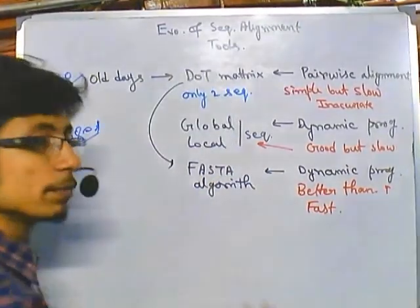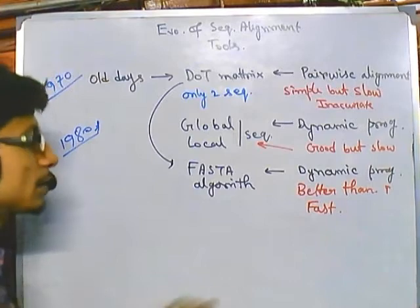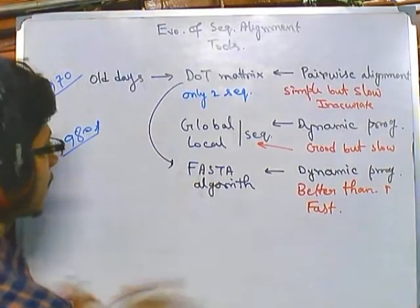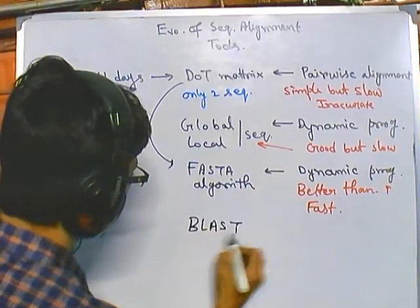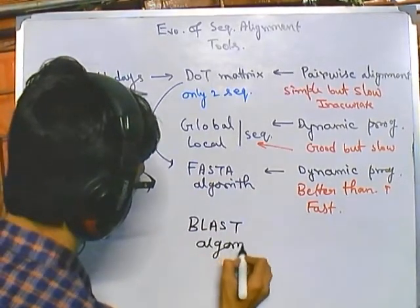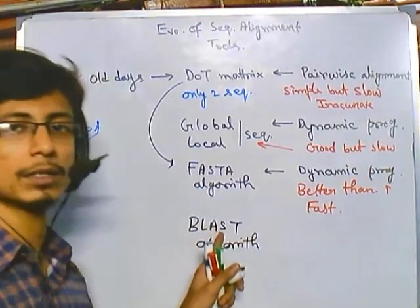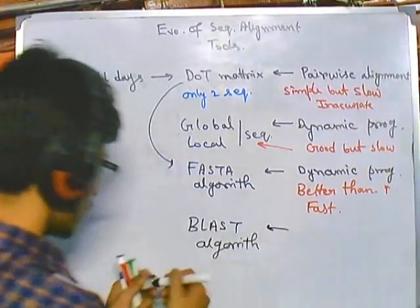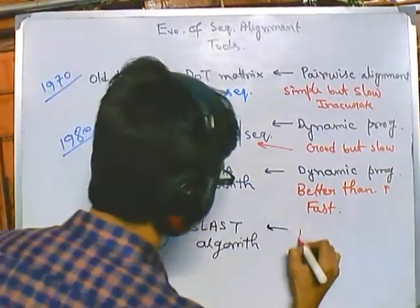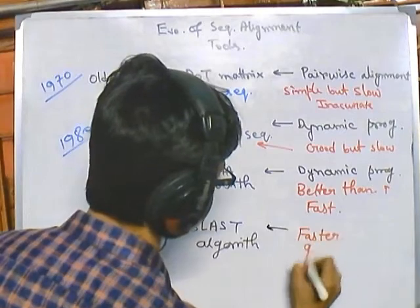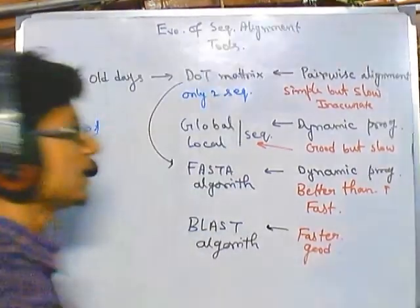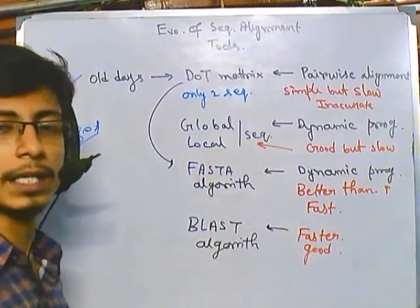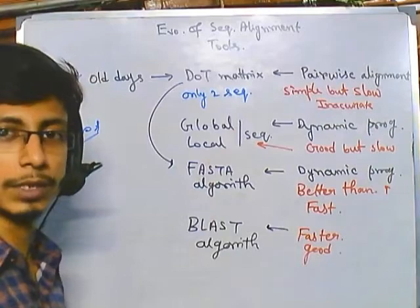But after that we needed much more faster alignment, and by modifying further we got what is called the BLAST algorithm — Basic Local Alignment Search Tool. BLAST is much faster and also good for aligning small sequences. However, all these methods — dot plot, fast algorithm, and BLAST — can still only align two sequences at a time.